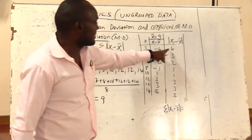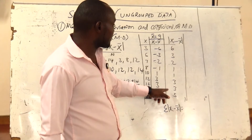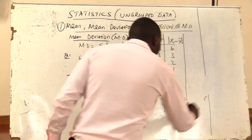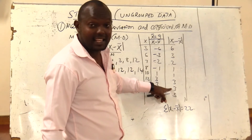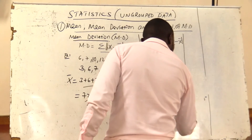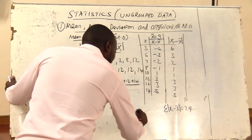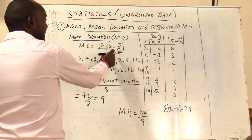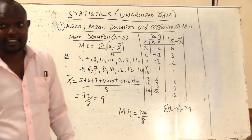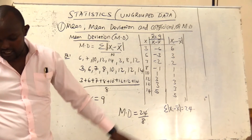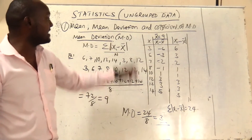Adding those absolute values: 6 plus 3 plus 2 plus 1 plus 1 plus 3 plus 3 plus 5 gives 24. So the mean deviation MD equals the summation (which is 24) all over N (which is 8 data). Therefore MD equals 24/8, and the answer is 3. That is how we calculate the mean deviation.